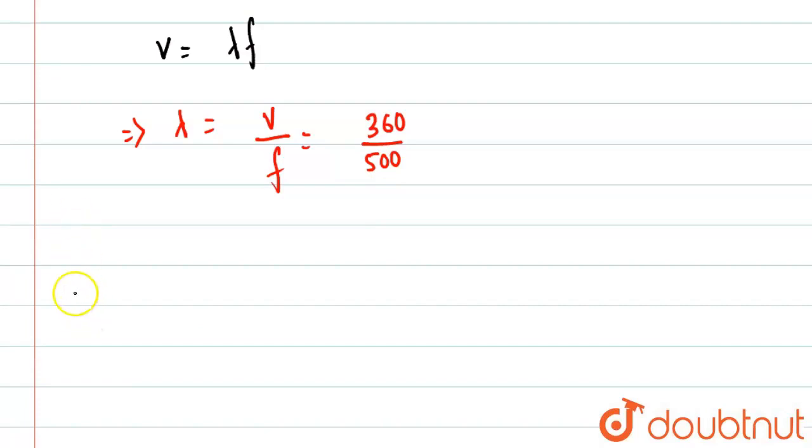So now what we'll do - path difference formula. Path difference is equal to basically distance between two points.